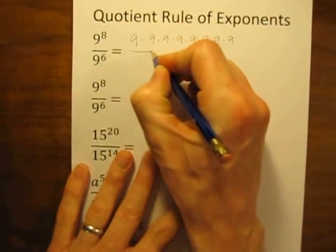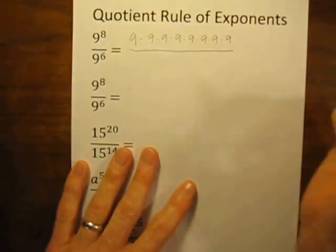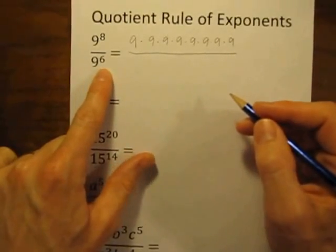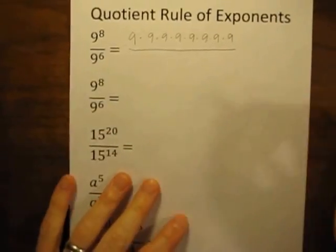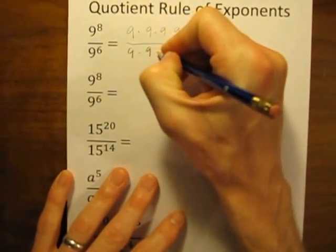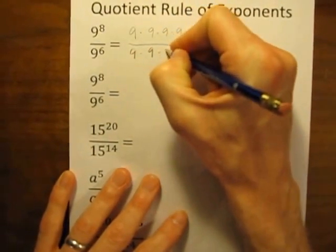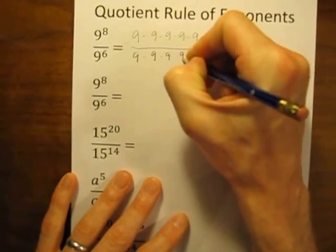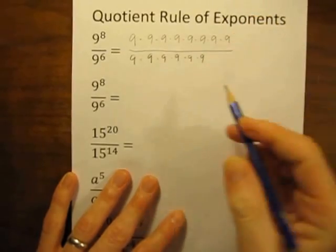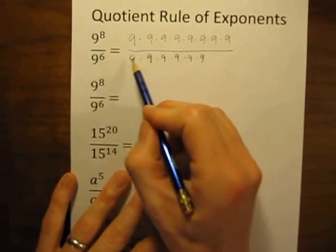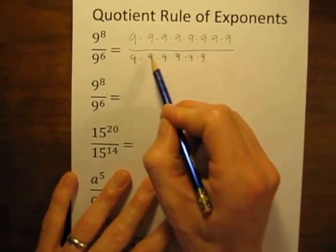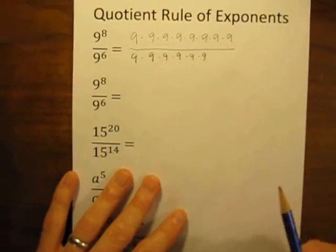Now let's write the bottom, the denominator, in expanded form. This is 9 to the 6th power, so there will be 6 nines multiplied together: 9 times 9 times 9 times 9 times 9 times 9.